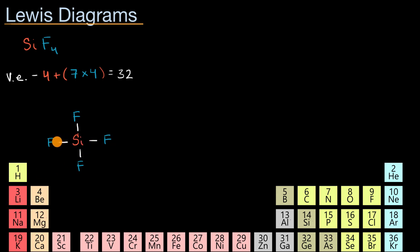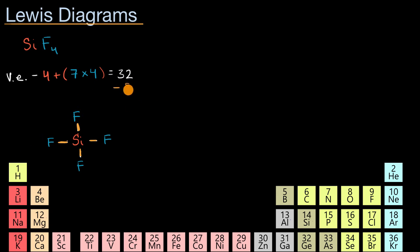Each of these covalent bonds — each line in our Lewis diagram — represents two electrons. For example, each bond represents two electrons shared between that fluorine and the silicon. So far, the four bonds account for two, four, six, eight electrons total. If we subtract eight from 32, we are left with 24 electrons still to account for.